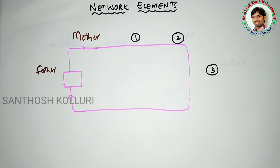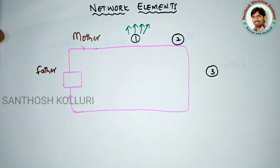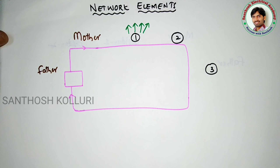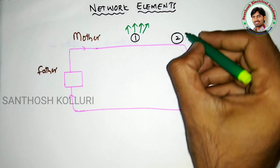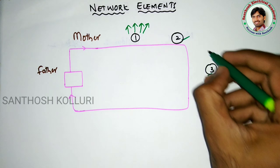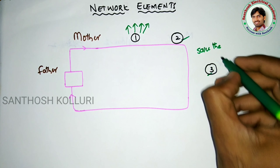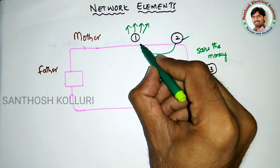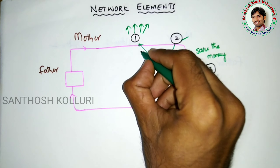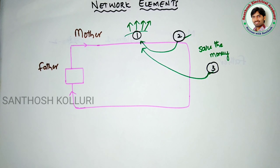Child number one is going to spend that pocket money in various forms without storing a single rupee. Children number two and children number three are going to save that pocket money, and whenever child number one requires money, even though he has spent it all, they are going to donate that money to him.